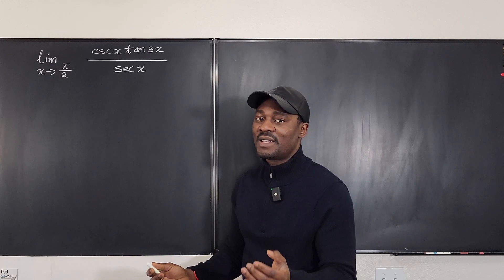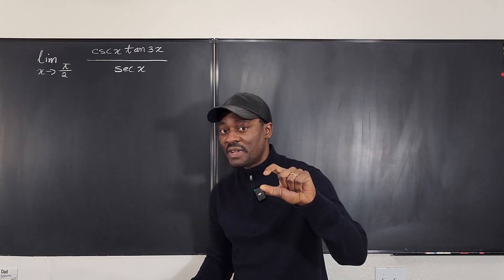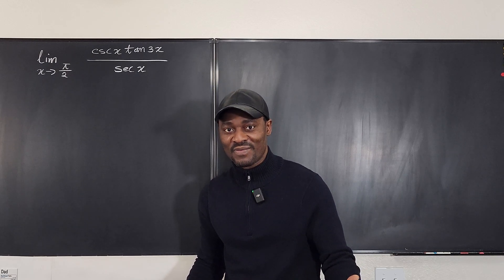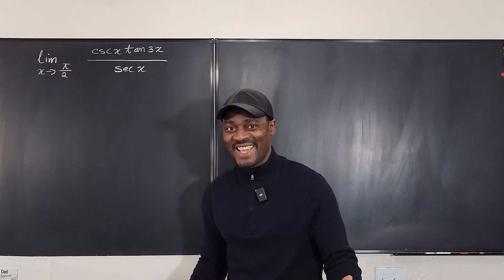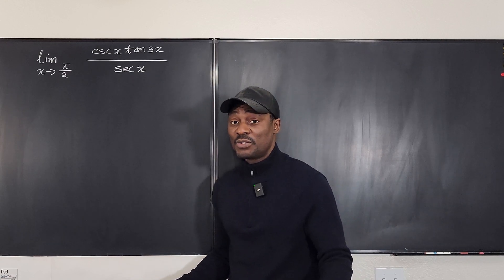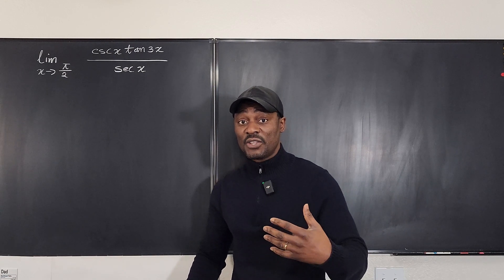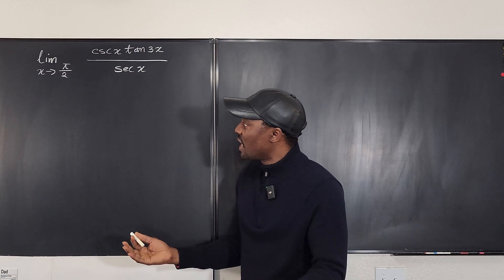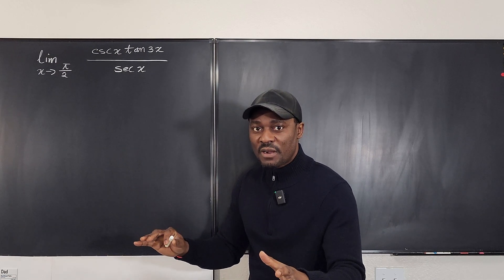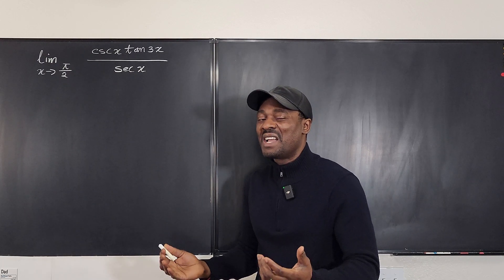So this case is infinity over infinity — the indeterminate form. You cannot do anything with it, and you cannot even use L'Hôpital's rule here. This is a case where you have to understand your trig simplification and rewrite the expression in a language you understand: sine and cosine.